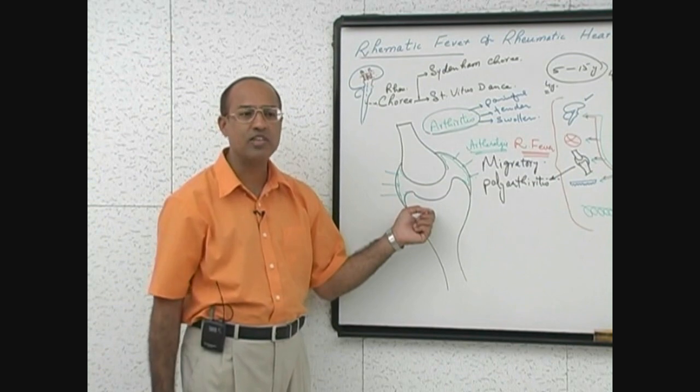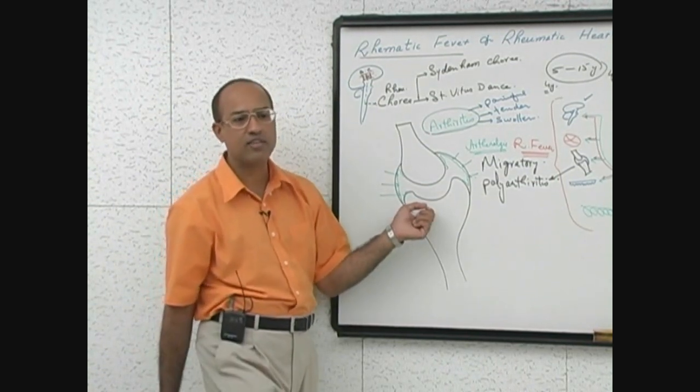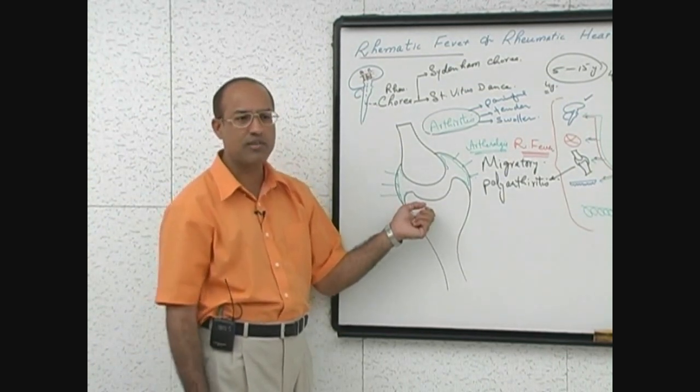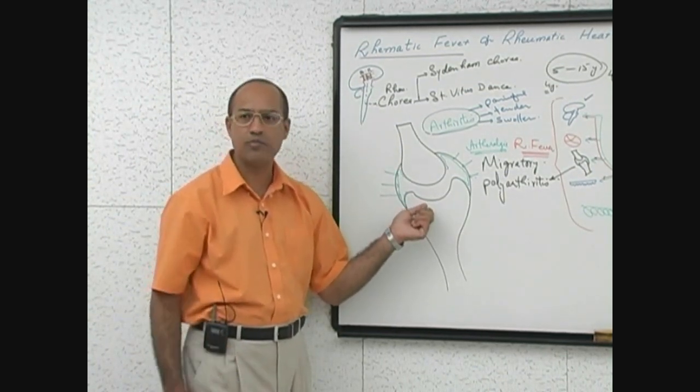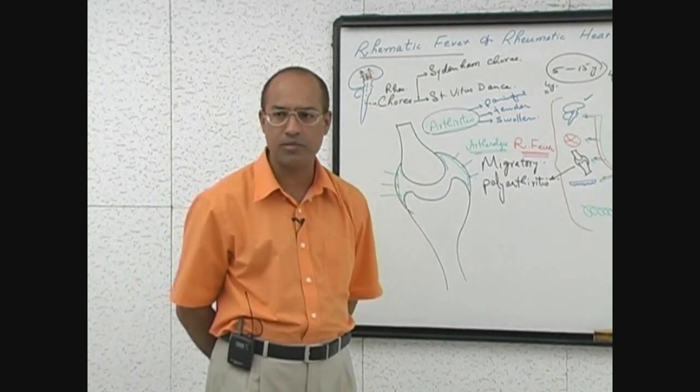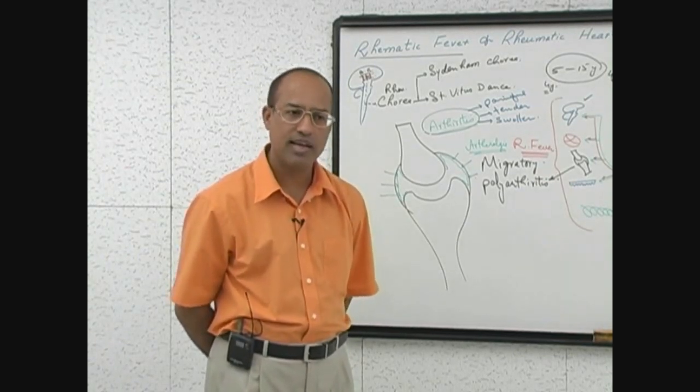As soon as you know this is migratory nature, or child is brought with history telling that five days back child was having ankle joint inflammation and pain and now he has knee joint, then the migratory pattern is clear. You can immediately give high-dose aspirins. You will admit the patient, give strict bed rest, and give high-dose aspirins.